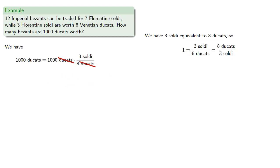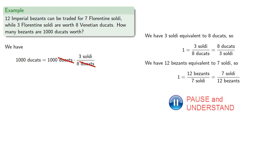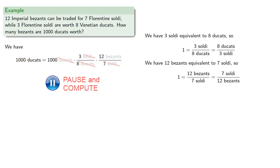Now our units are soldi, which we don't want, but we do know that twelve besants are equal to seven soldi. We'll use the form that eliminates soldi and incidentally puts in besants. Now our units are correct. We'll ignore them for a moment to get our computation, and restore them to get our final answer using units.